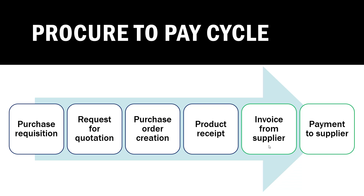Usually in an organization, the procurement cycle starts with a purchase requisition — sometimes also called a purchase request — where users from various departments prepare a request for the material that needs to be purchased and submit it. Based on organizational policies, the request may go through approvals, and once approved, it goes to the procurement team who requests quotations.